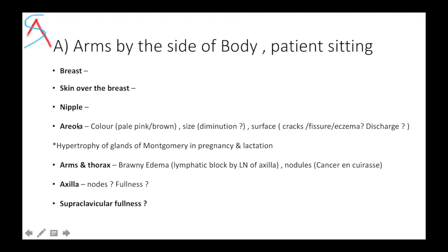The most common causes for retraction of nipple are carcinoma of breast, chronic mastitis, congenital retraction, or chronic disease like TB. Next, comment about the areola: its color, size, any diminution in size, surface, and whether there are any cracks, fissures, eczema, or discharge. Generally, hypertrophy of glands of Montgomery is seen in pregnancy and lactation.